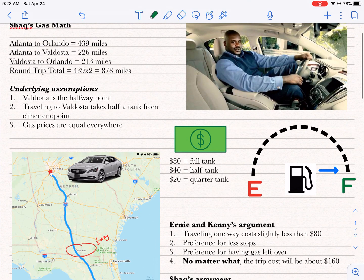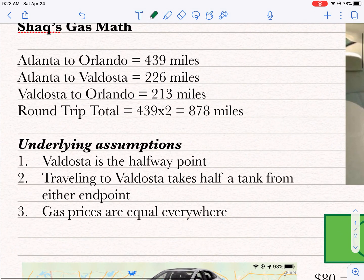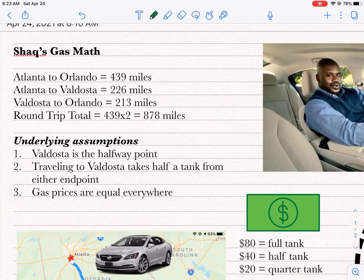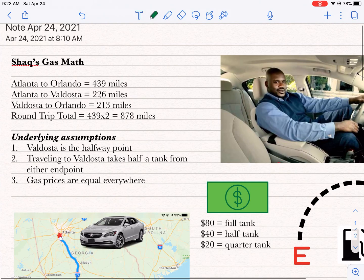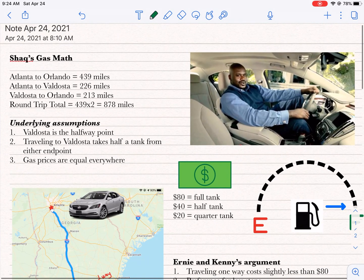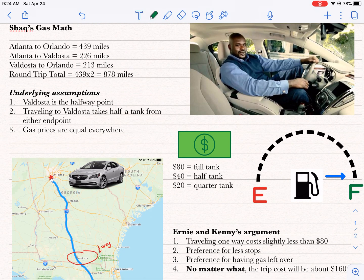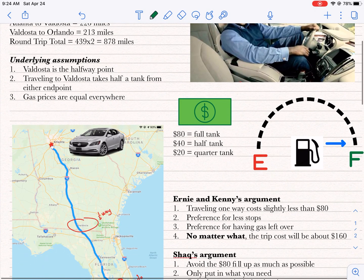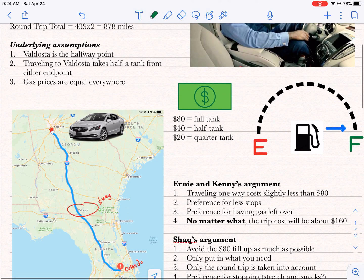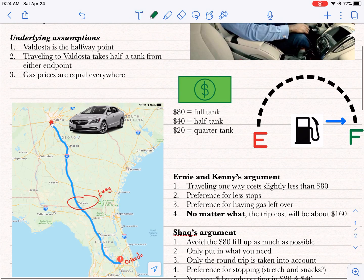Now we have here some of the breakdowns of how far that distance is. That's really not the point. Gas mileage, miles per gallon, all that, the type of car is really not the factor here for this particular problem based on how they argued it. So let's talk about some underlying assumptions. Number one, Valdosta is the halfway point.